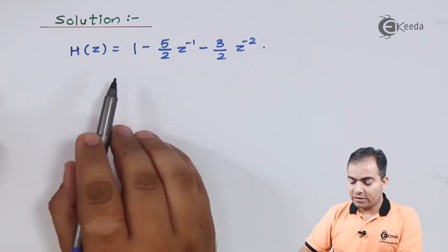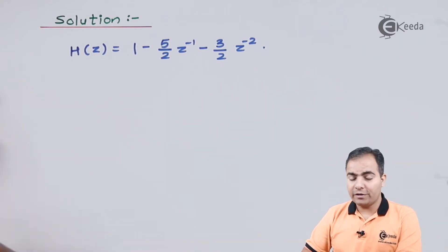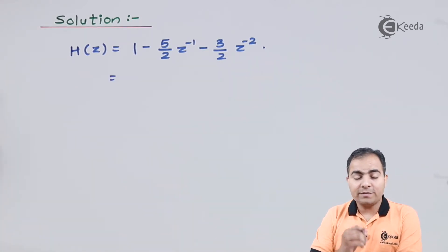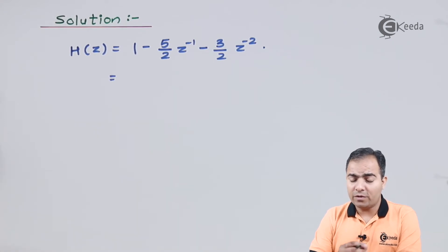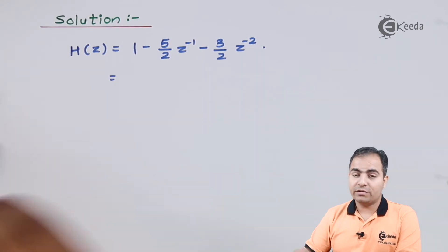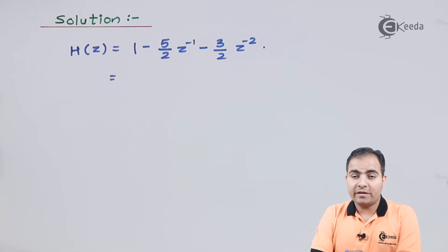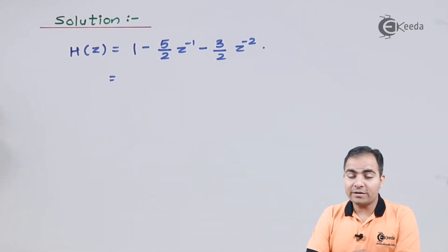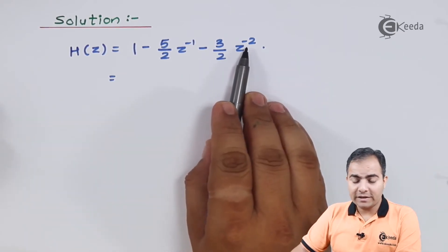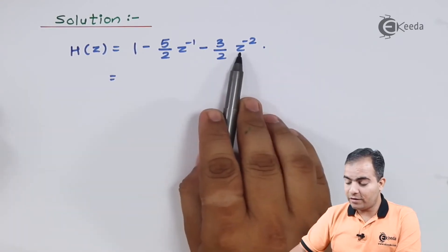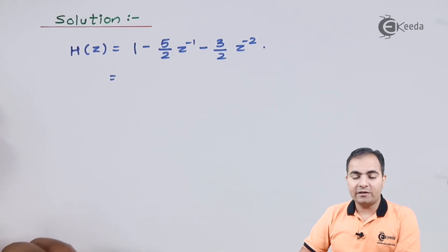We can solve this question as is, or else convert it into positive powers of z. We will multiply numerator and denominator by the highest power of z. The lowest power of z in this function is minus 2, so we will multiply the numerator and denominator by z². This way the lowest power gets removed and we work with positive powers of z.